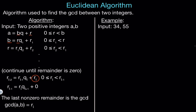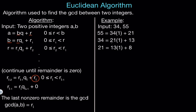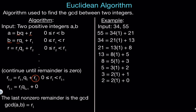Let's look at an example. Let's say we wanted to find the GCD between 55 and 34. The first step is to write 55 as a multiple of 34 plus a remainder: 55 equals 34 times 1 plus 21. Now we do the same thing with 34 and 21: 34 equals 21 times 1 plus 13. Repeating: 21 equals 13 times 1 plus 8; 13 equals 8 times 1 plus 5; 8 equals 5 times 1 plus 3; 5 equals 3 times 1 plus 2; 3 equals 2 times 1 plus 1; and 2 equals 2 times 1 plus remainder 0. Since the last non-zero remainder was 1, the GCD of 55 and 34 is equal to 1.